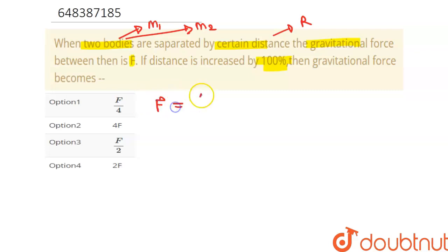That is F equals to G times m1 times m2 over r square. G is our universal gravitation constant. Now in question, it is given to us that it is increased by 100%, that means it simply means that it is doubled.